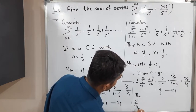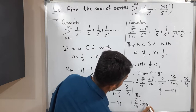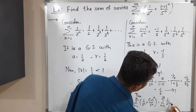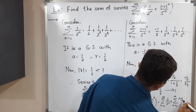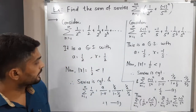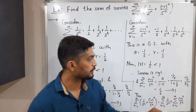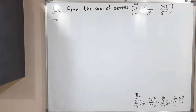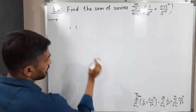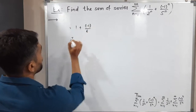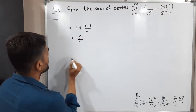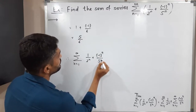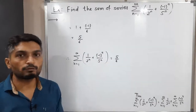Now let us find the required sum. The summation of [1/2^n + (-1)^n / 5^n] can be split into two separate summations. The value of the first summation (1/2^n) is 1, and the value of the second summation ((-1)^n / 5^n) is -1/6. Adding these: 1 + (-1/6) = 5/6. So the series is convergent and converges to 5/6. That means the sum of this series is 5/6.